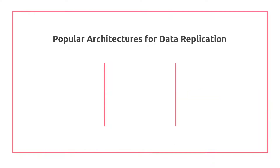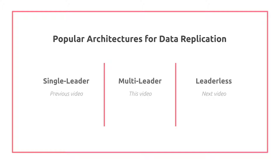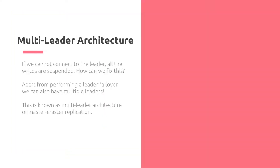Multi-leader replication. Some popular architectures for data replication include single-leader, multi-leader, and leaderless. We covered single-leader in the previous video and this video will be covering multi-leader. If we cannot connect to the leader in the single-leader replication model, all the writes are suspended. Apart from performing a leader failover, which may require waiting a specific amount of time or occurs manually, we can also have multiple leaders — this is known as multi-leader architecture or master-master replication.